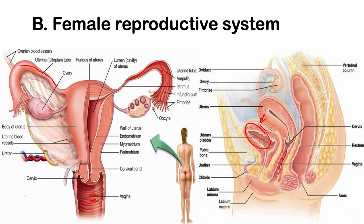Note that in your female reproductive system, the urethra is different from the vagina. During sexual intercourse, it is the vagina that is involved, while during urination it is the urethra. This is different from males, where the passage for both semen and urine is the same — all through the urethra.